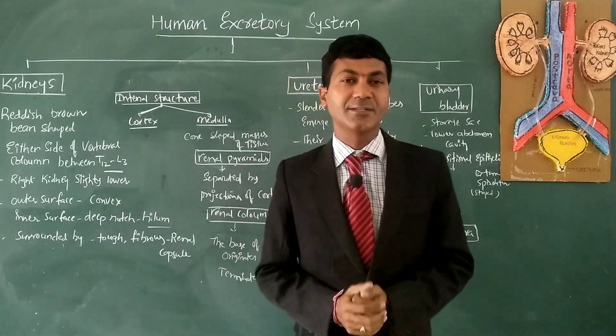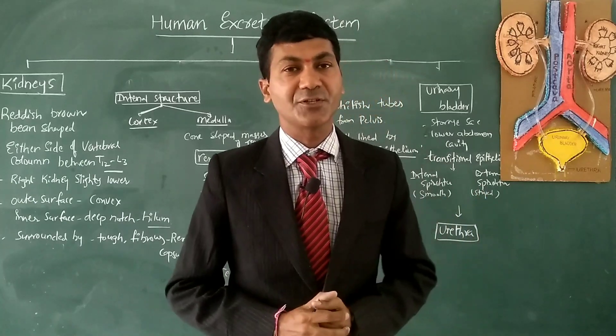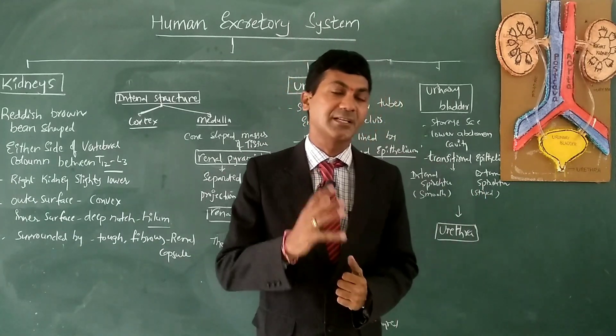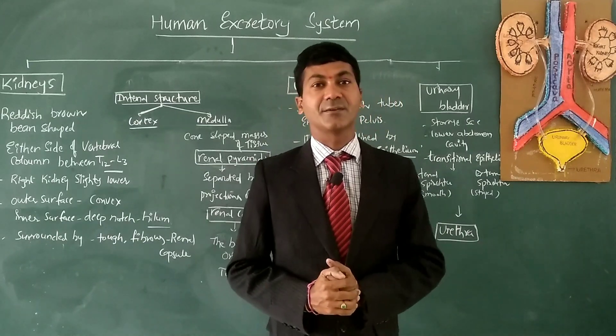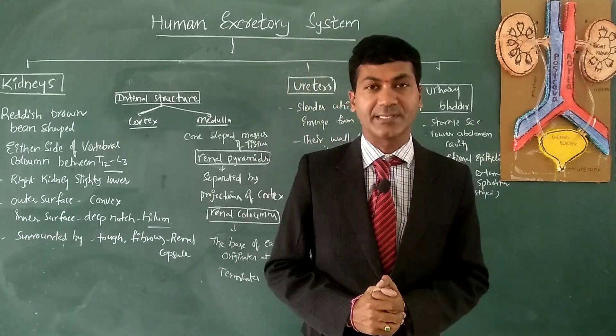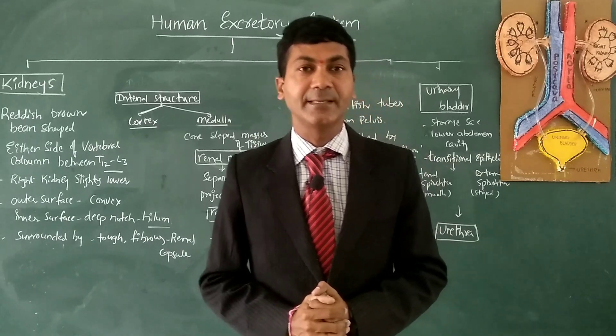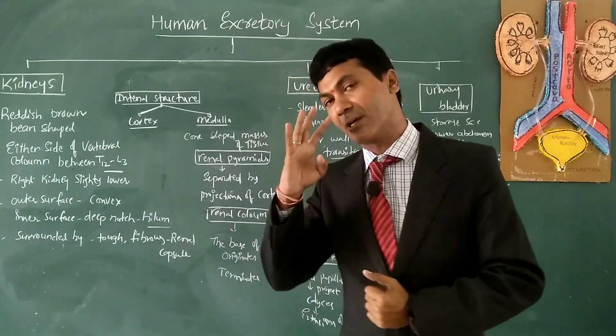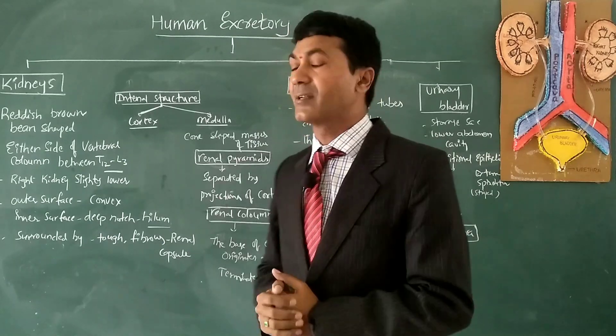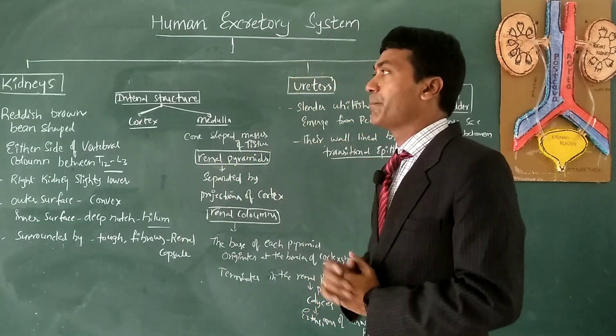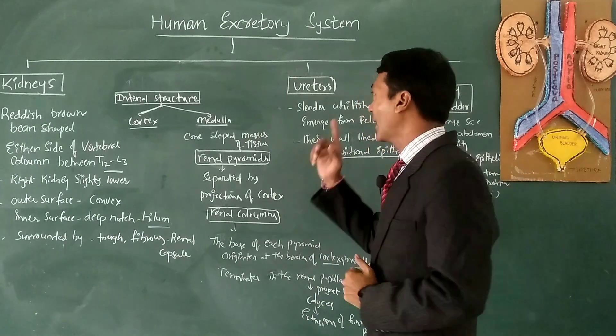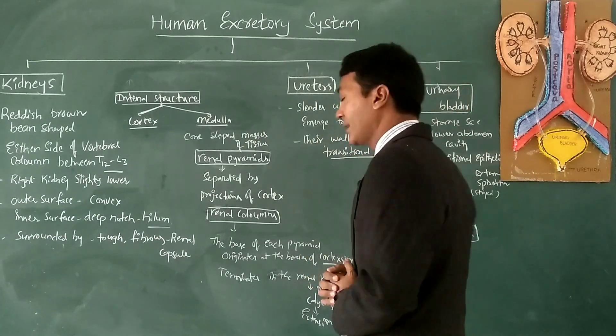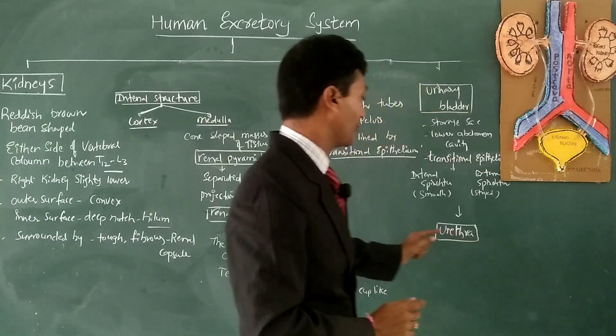In this lecture, I will give you brief information on the structures and different organs present in the human excretory system which help in the excretory process. There are four organs: a pair of kidneys, a pair of ureters, a single urinary bladder, and a single urethra.